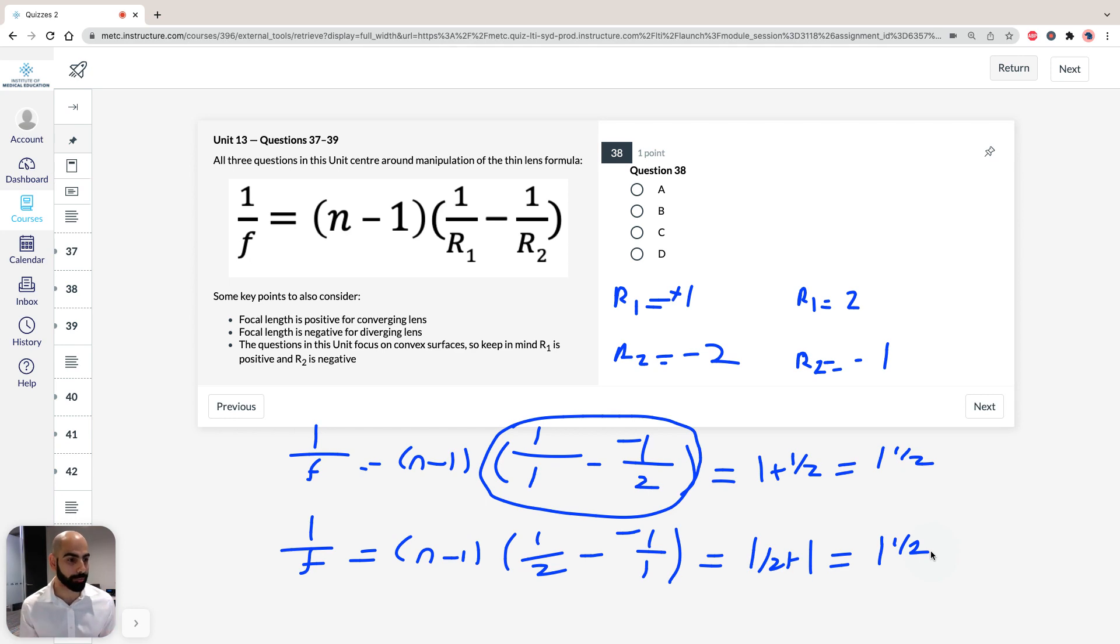So we see there that there's not going to be a change. The lens would refract light in the same way. So that's why the answer for 38 has to be C. So again, just take note of the different sign convention for the radii. So if it's R1, it's going to be positive. R2 is going to be negative. If you're going to swap the sides around, again, R1 is going to be positive and R2 is going to be negative.